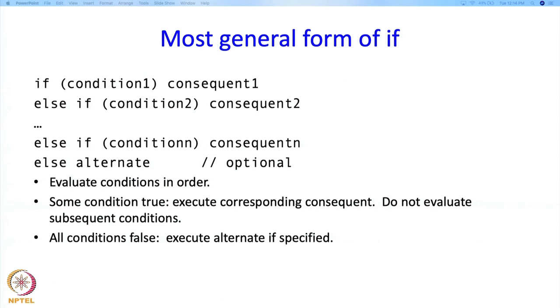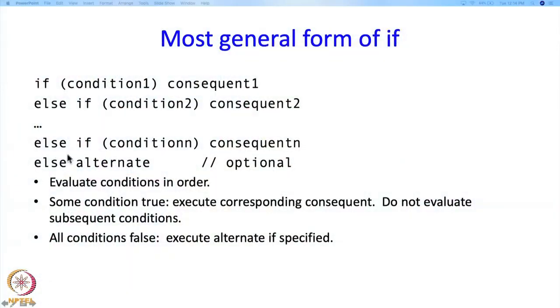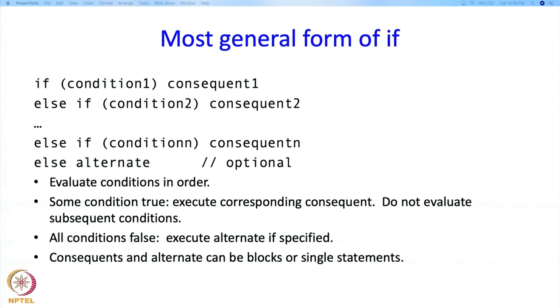If all conditions are false — condition 1 through condition n — then we execute the alternate if it is specified. If it is not specified, then we just declare that the execution of this if statement is over. This entire statement gets over if all conditions are false and the alternate is not specified. As always, consequents and the alternate can be blocks or single statements.